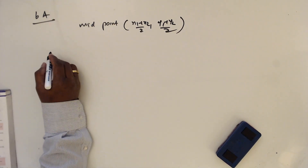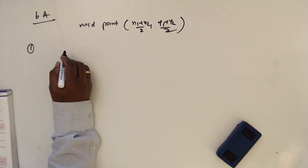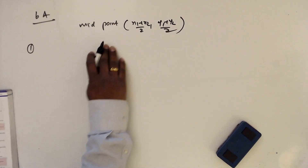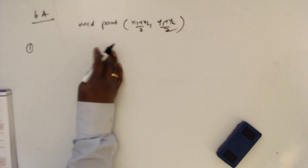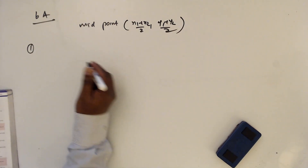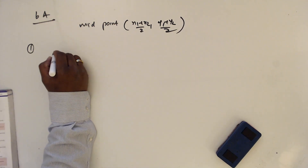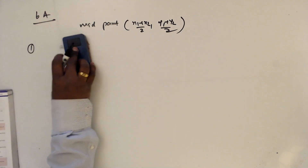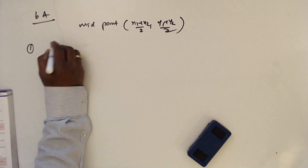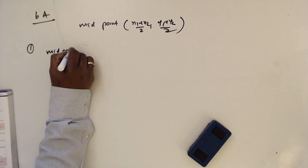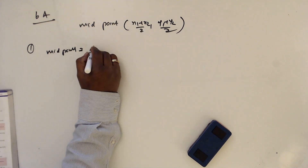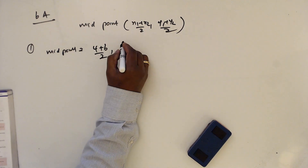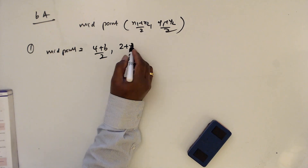Exercise 6A, question number one — we want to find the midpoint. The formula I am going to use is: x1 plus x2 divided by 2, y1 plus y2 divided by 2. For part a, the x values are 4 plus 6, and the y values are 2 plus 8.